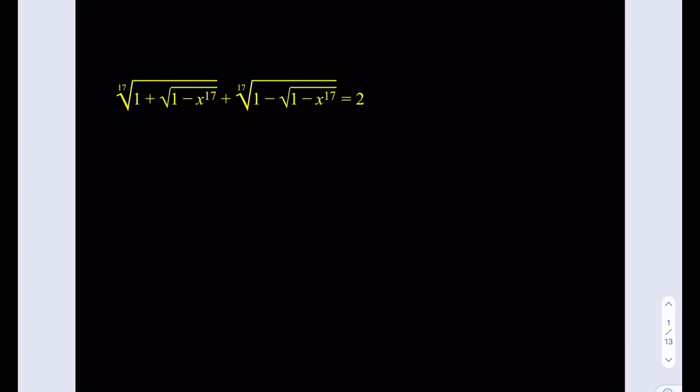Hello everyone. In this video we're going to be solving a very radical equation. We have the 17th root of 1 plus square root of 1 minus x to the 17th power plus the 17th root of 1 minus the square root of 1 minus x to the 17th power, and that is equal to 2.